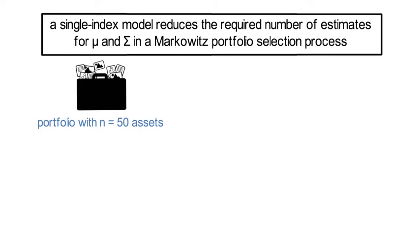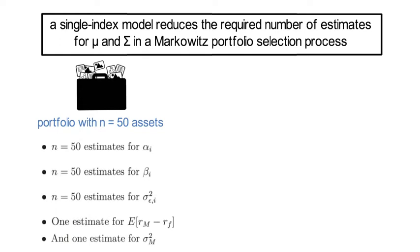Consider a portfolio with n equals 50 assets. Assuming their returns follow a single index model means one would have to estimate 50 estimates for alpha i, 50 estimates for the betas, 50 estimates for sigma squared epsilon i, the idiosyncratic risks, and one estimate for the expected market risk premium and one estimate for sigma squared m. In total we would have to estimate 152 input parameters.